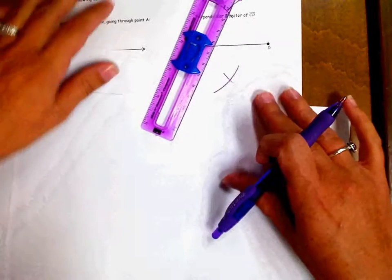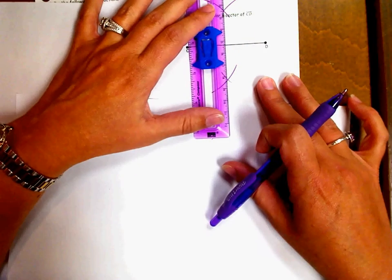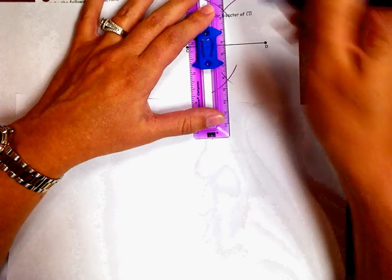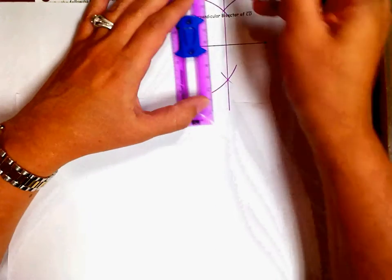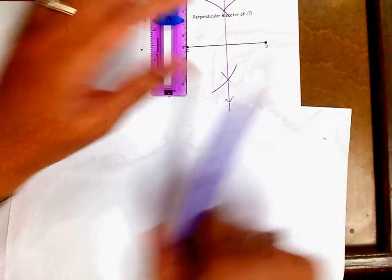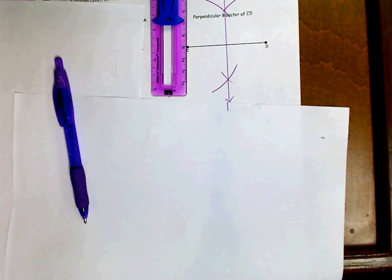Where they intersect, you're going to use your straight edge to connect those. And this is your construction of the perpendicular bisector.